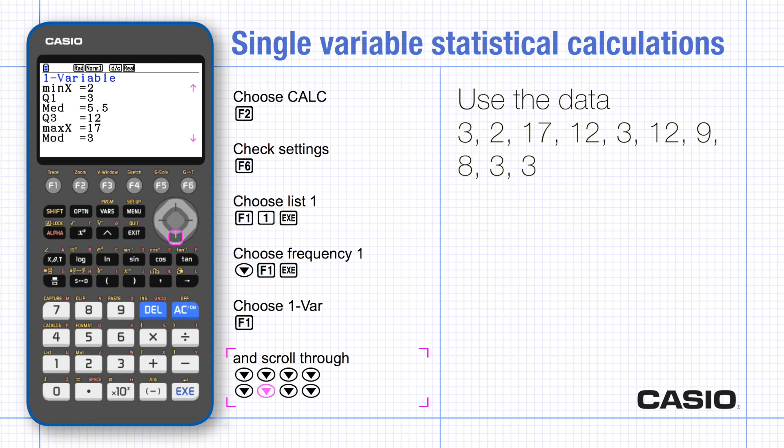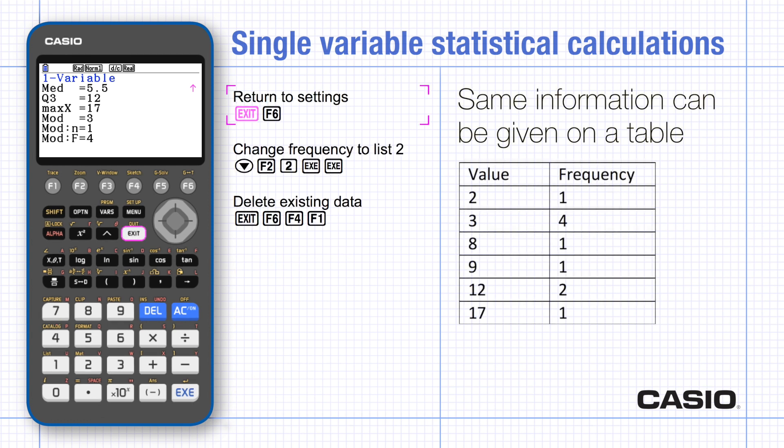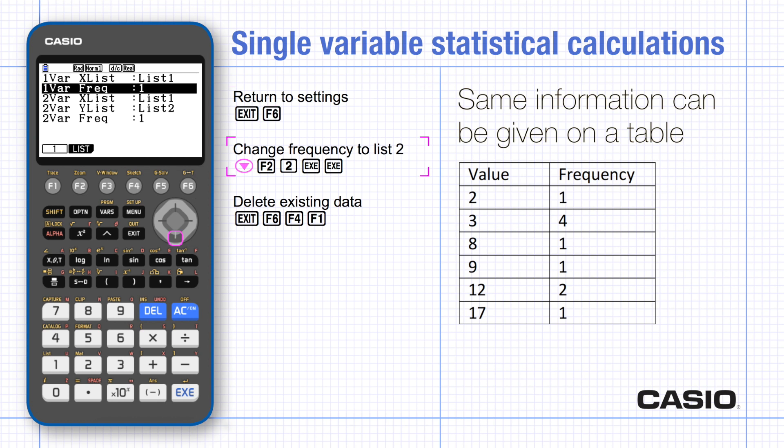We could type the same data as a frequency table, so we will need to go back and change the settings. To do this, press exit and then set. To change the settings, scroll to frequency and choose list and list two.